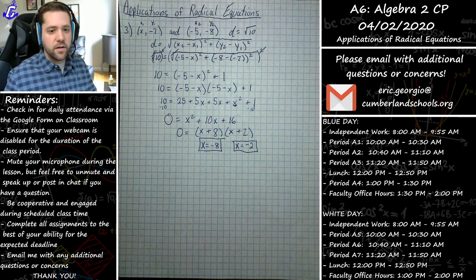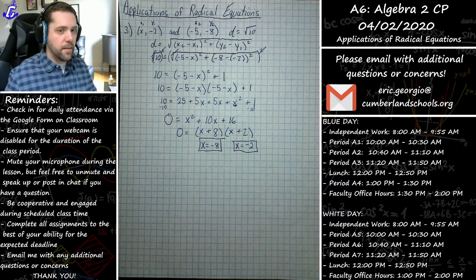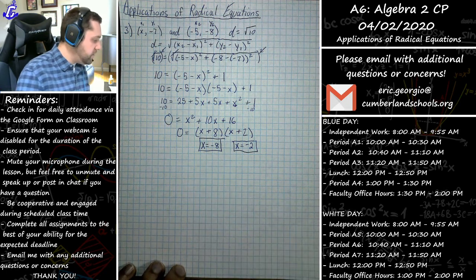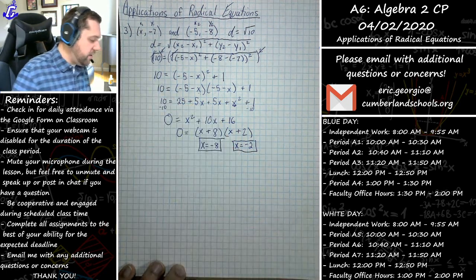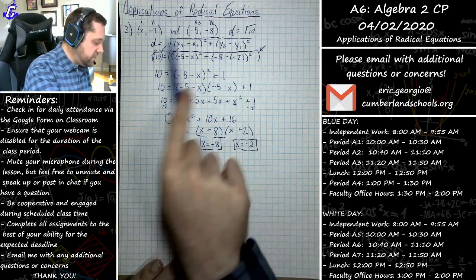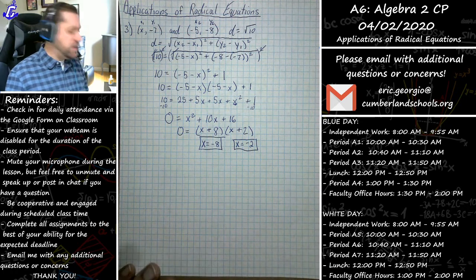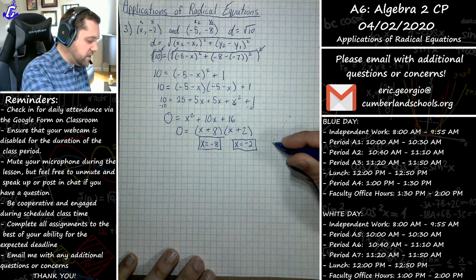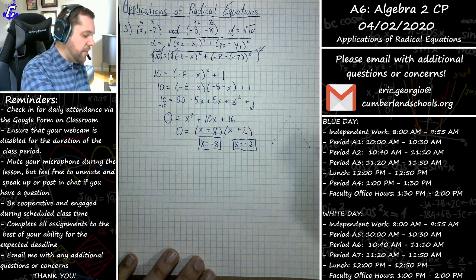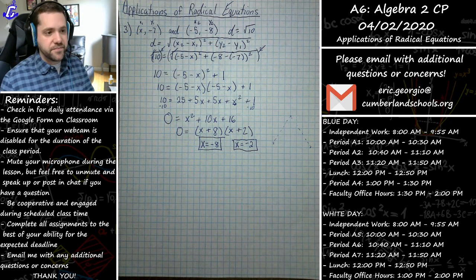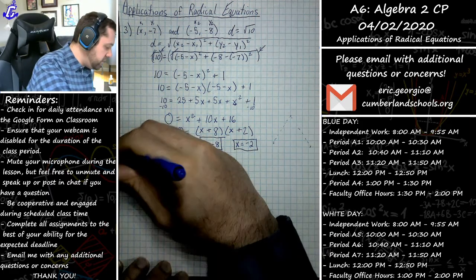These two values represent the possible x-coordinates. If we plug in negative eight or negative two, both should check out. Geometrically, from the given point you could draw a line in either direction, and both would have a distance of the square root of 10 units — that's why there are two possible solutions.